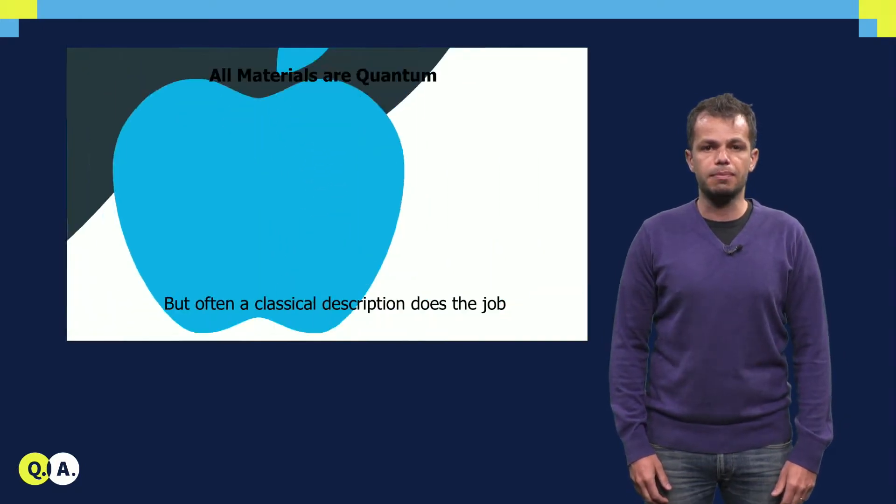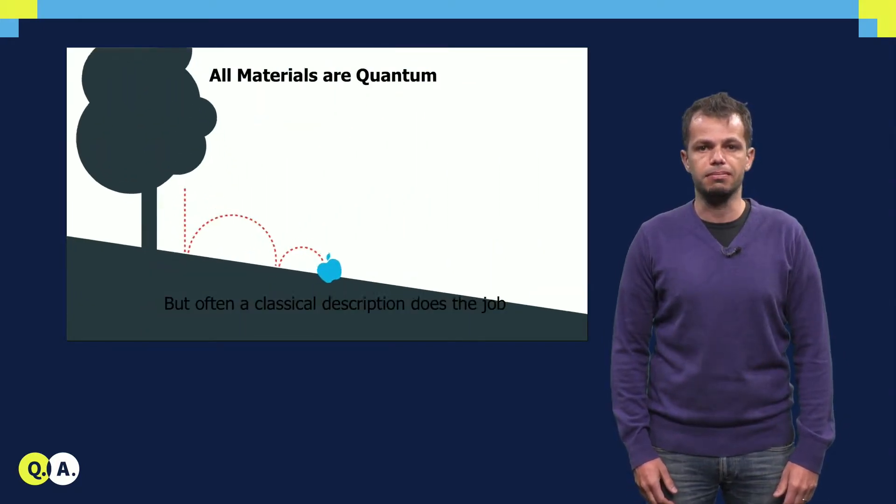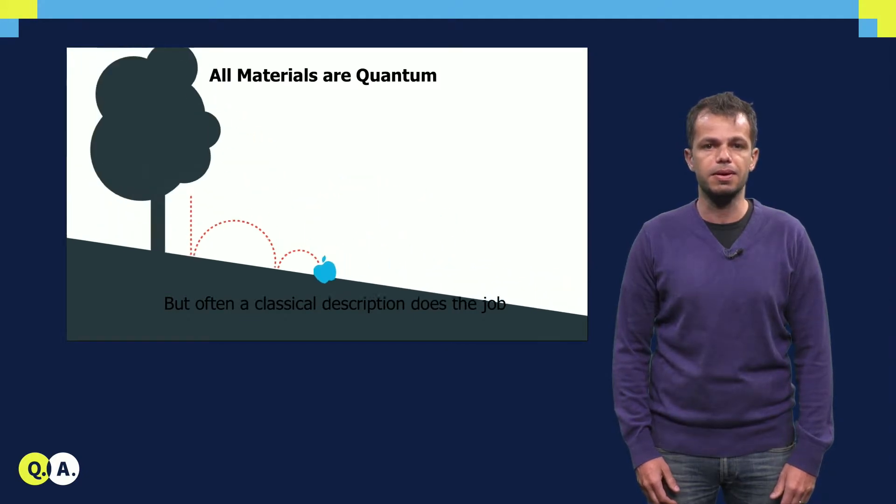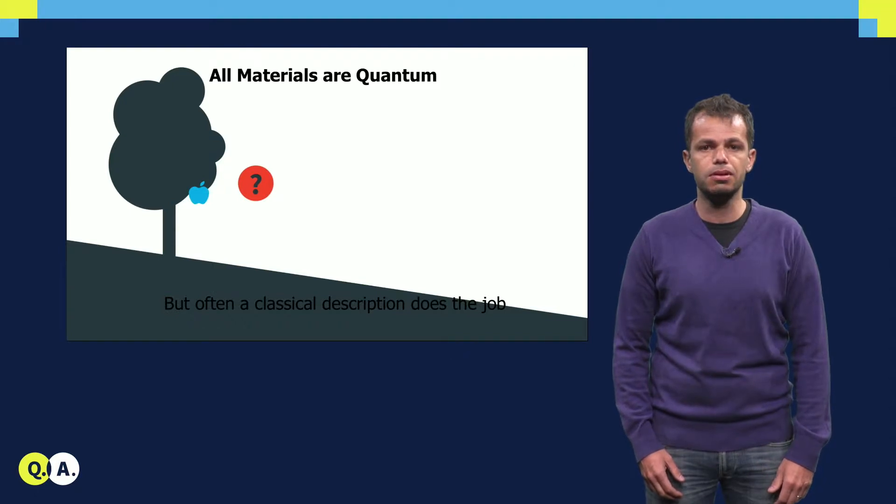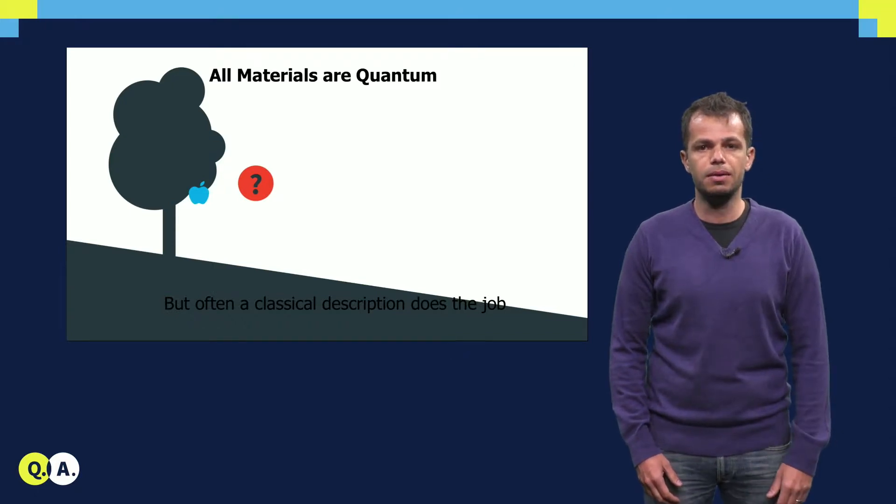This is because we can often approximate the quantum behavior in materials by a classical description. It turns out that a classical description is in fact suitable for most of the phenomena that we experience in the macroscopic world around us.